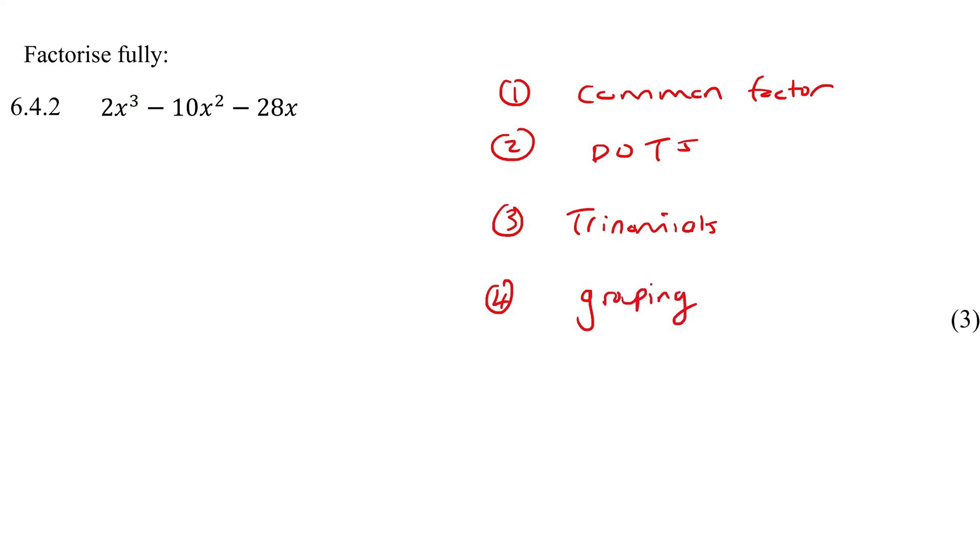If I look at this, I look for a common factor first, and I actually see one. I know that the number two can go into all of those, and I also see that I could take out an x in each of those. So I take out a two and an x.